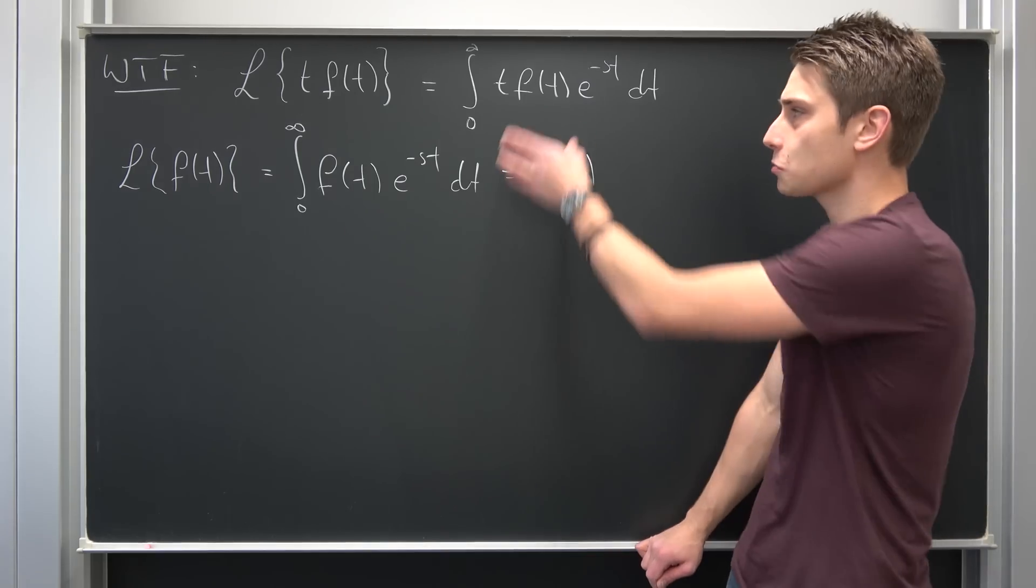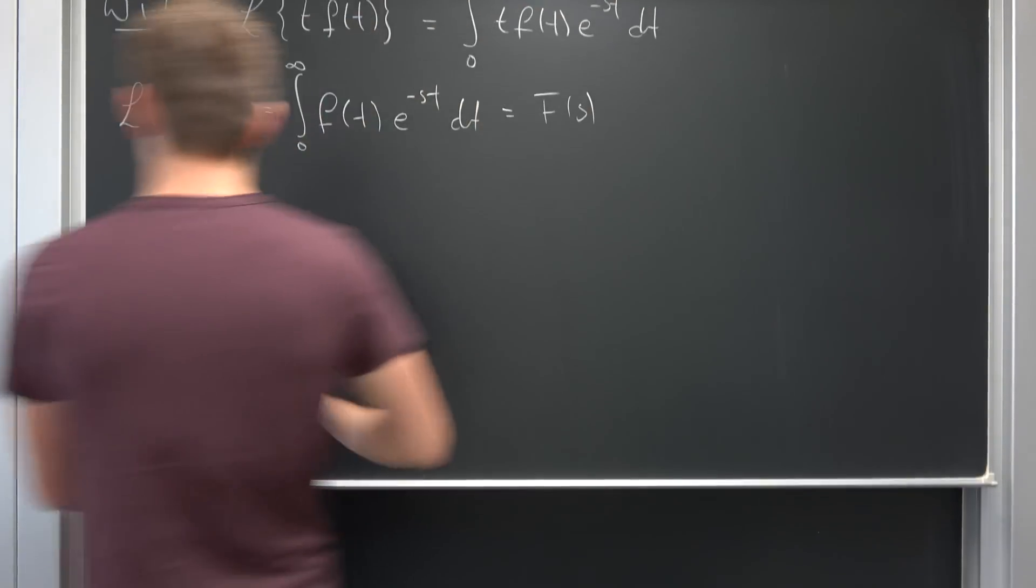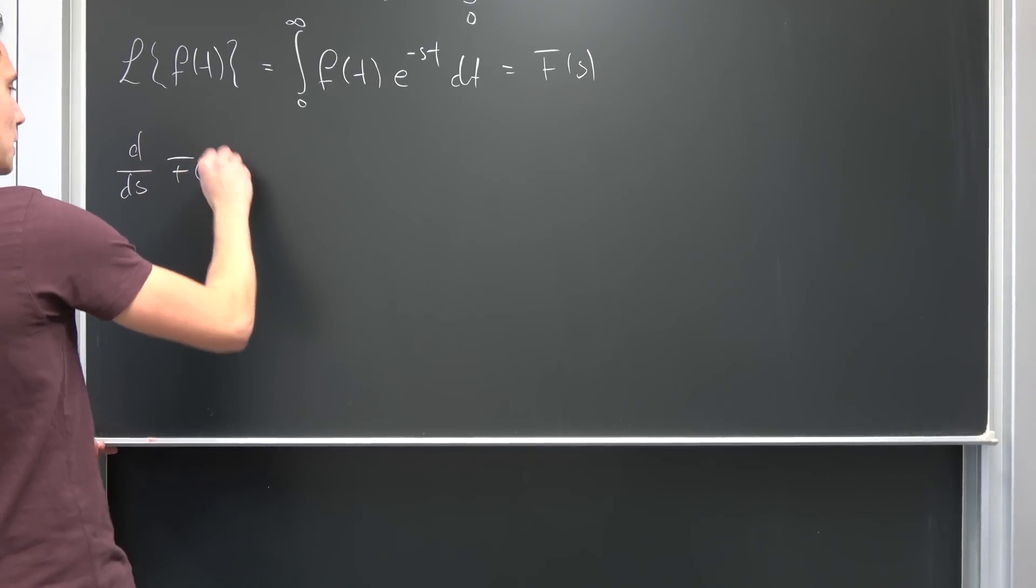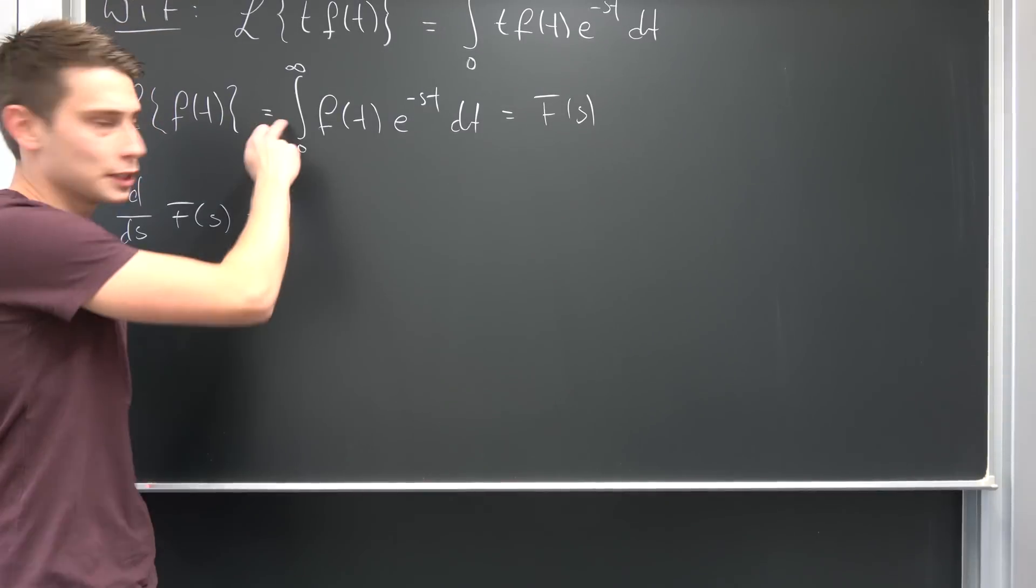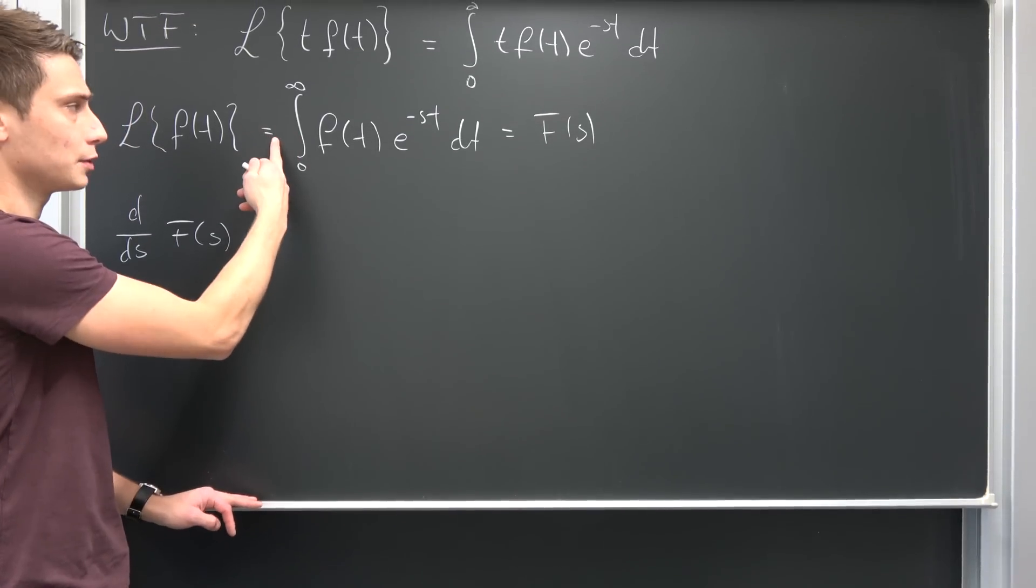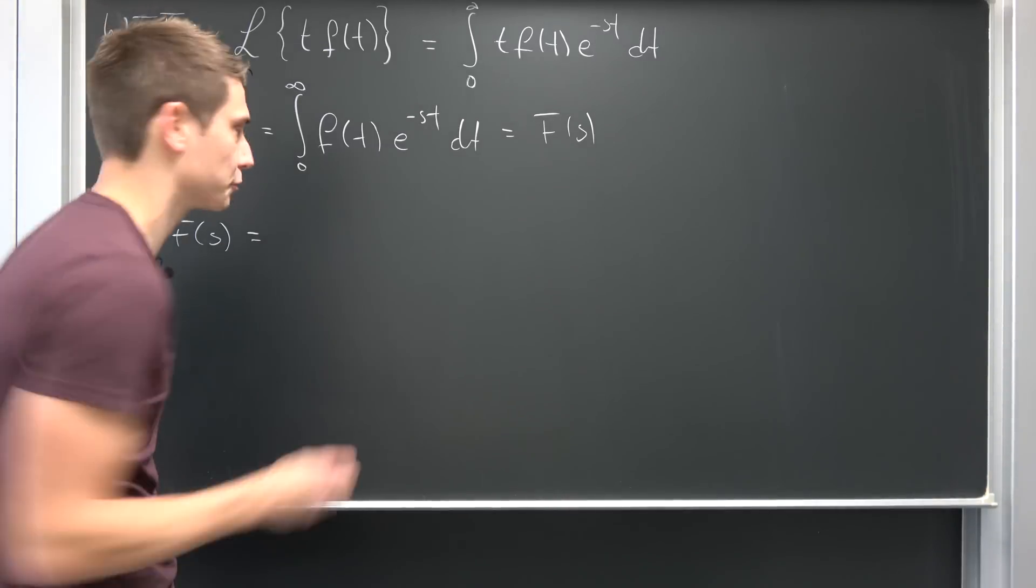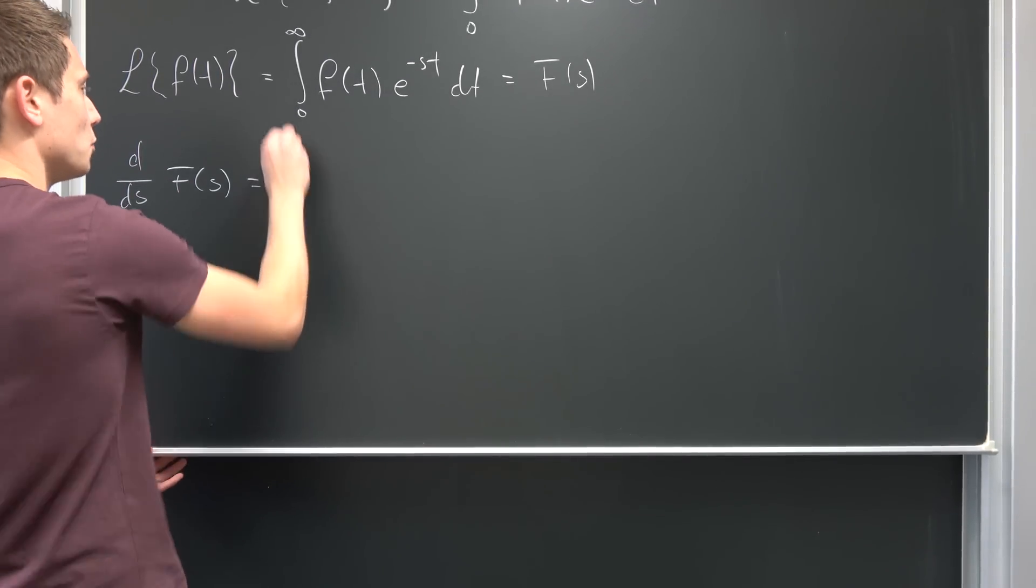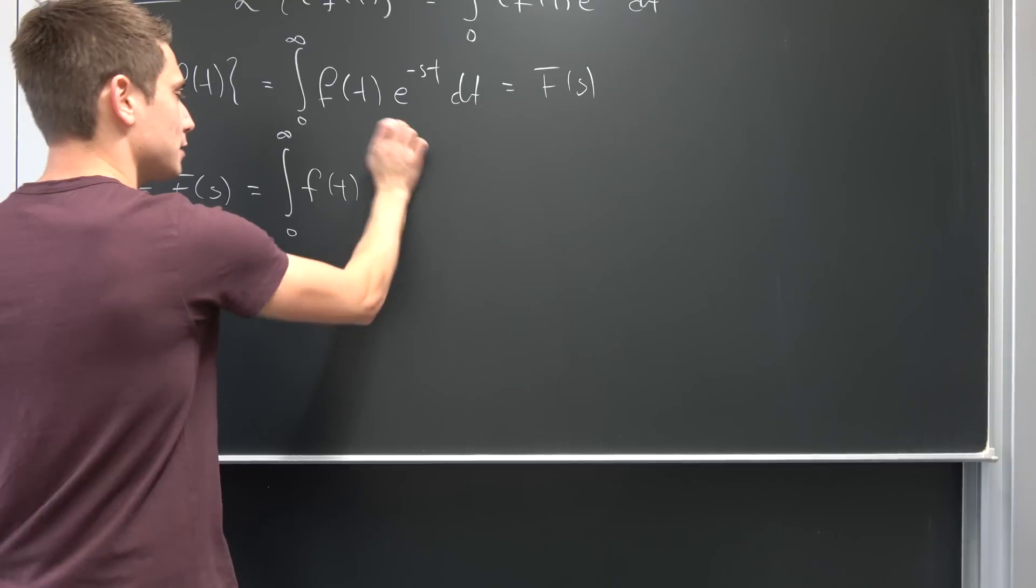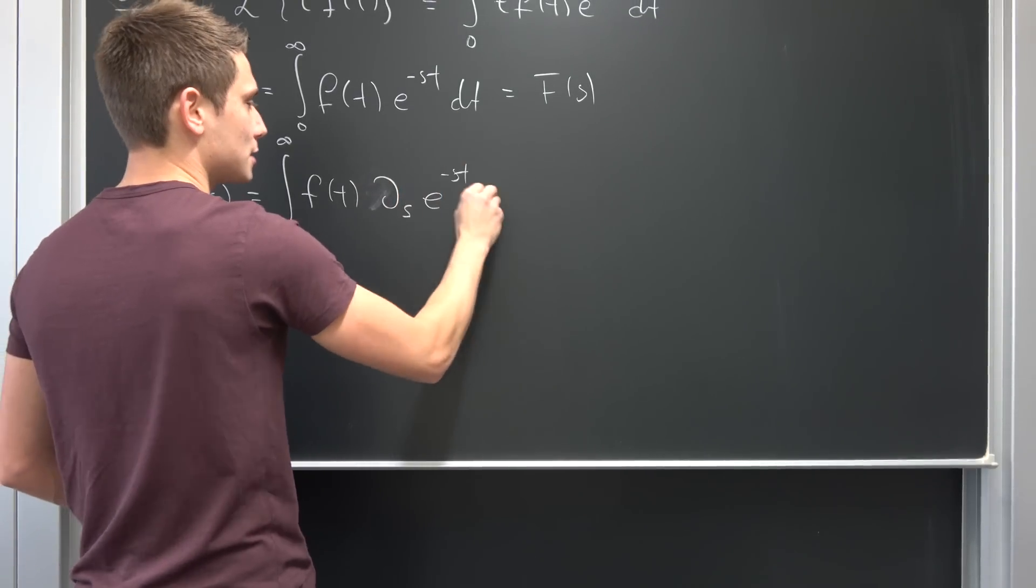Like I said, this looks like we had differentiated with respect to s, so why not do this? We know that d/ds of F(s) is the differential of this whole thing. But we're going to take the special case of the Leibniz rule to bring this differential to the inside and take the partial derivative with respect to s. So, integral 0 to infinity of f(t) times ∂/∂s of e^(-st) dt.